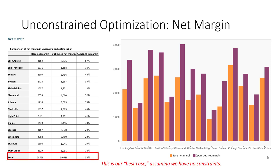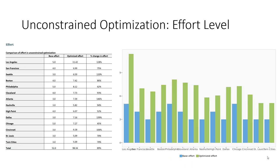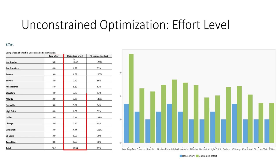This is our best case, assuming we have absolutely no constraints. We can see that when we look at our effort level for optimization. We have our base effort number of salespeople, and now we have an optimized effort — this is the absolute peak number of salespeople we should apply to each one of the markets.